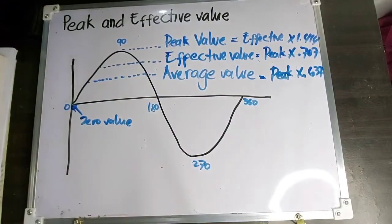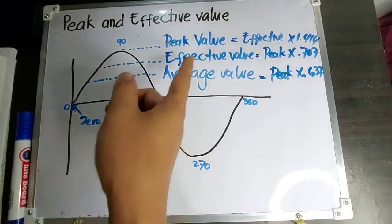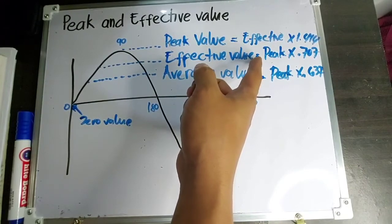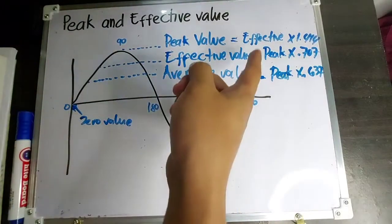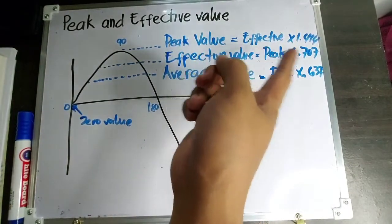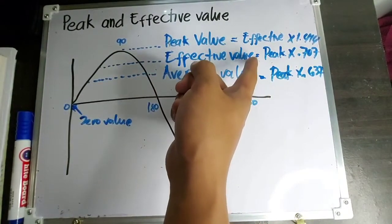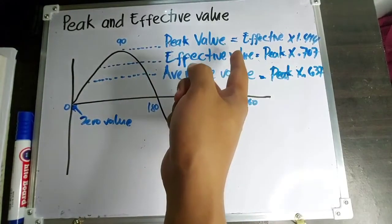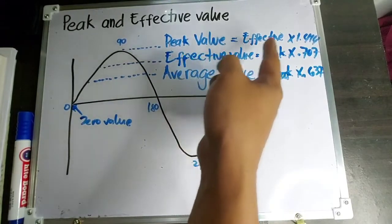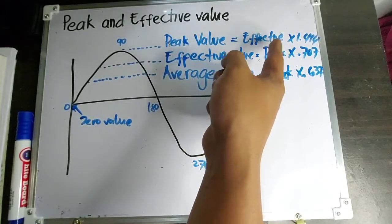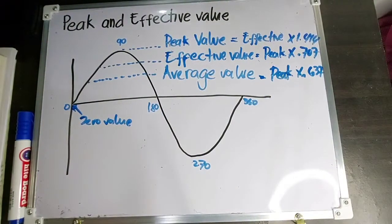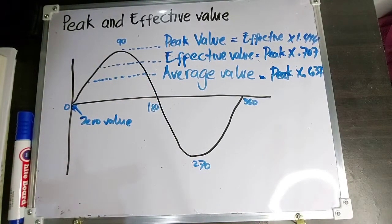Masabi ko nga kanina, yung effective value — ito yung nasusukat ng ating mga multitester. Halimbawa kung sukat ka ng voltage — 220, 230 — ano yung sukat mo lang is effective value. Kung gusto mong malaman kung ano yung peak value niya, kailangan mong gamitin yung formula ng peak value, na kung saan yung effective value na nakuha mo, imultiply mo ng 1.414. Yung effective value, ibang tawag dyan is RMS value.